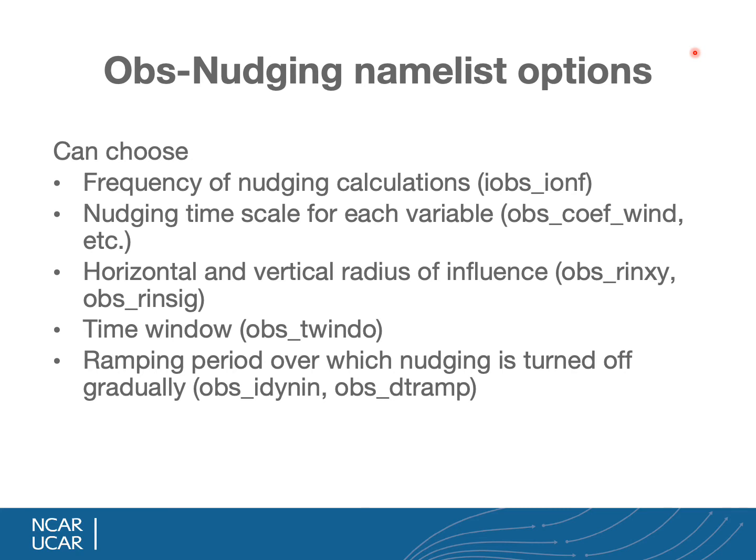OBS nudging namelist options include the frequency of nudging calculations in minutes, the nudging time scale for each variable controlling how strongly each is nudged, the horizontal and vertical radius of influence, and the time window. The vertical radius should be kept small, while the horizontal radius can be adjusted based on observation density and desired overlap between sites. The time window should be chosen based on observation frequency — for hourly observations, a window smaller than one hour is recommended. There is also a ramping period to turn off nudging gradually when transitioning to a free forecast.